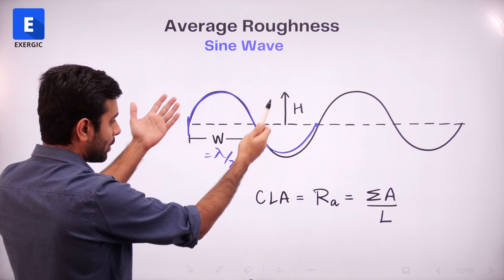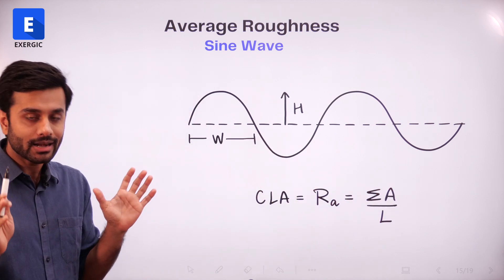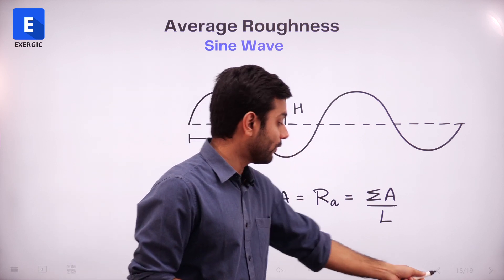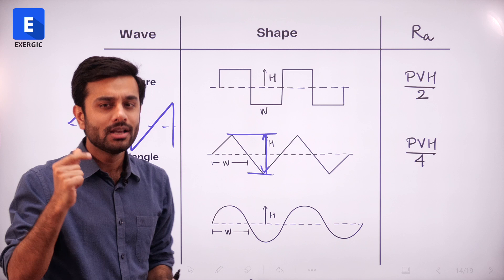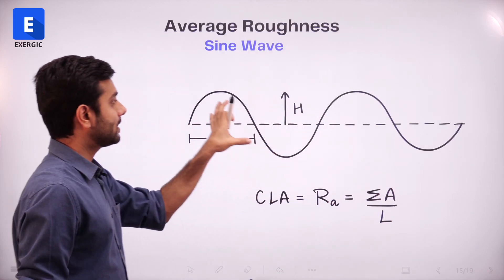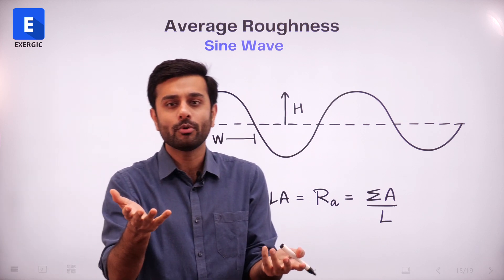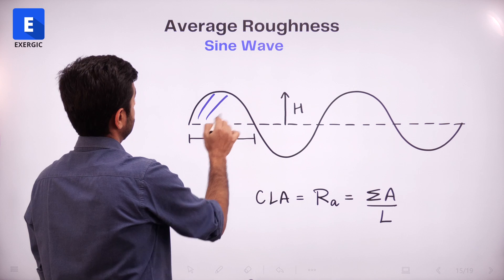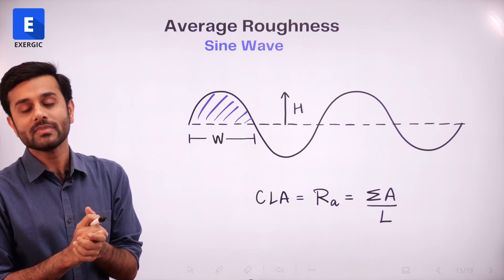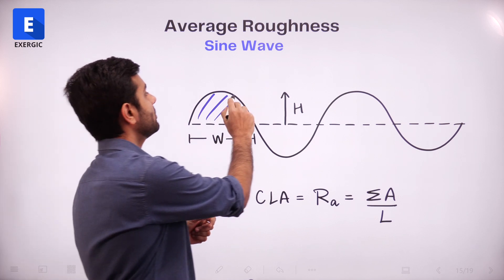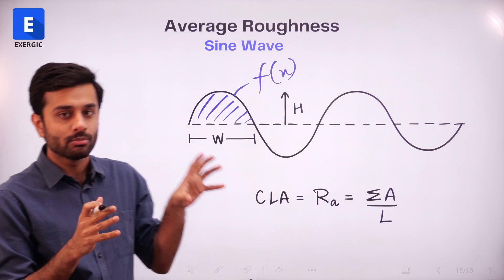H is the amplitude on one side, or the maximum value. The generalized formula for CLA or RA is a summation of areas. For square, rectangle, or triangular waves, a direct formula could be applied easily. For a sine wave it is almost as simple, but not completely direct. If you remember the area formula for one side of a sine wave, you can substitute and divide by L. But if you don't, or if given a different function, you need to know what to do.